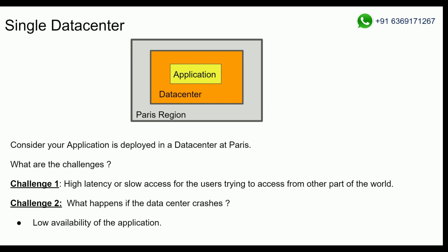So, in this situation, you will see how many challenges you can see. The challenge is high latency, or slow access, for the user who is trying to access this application from other parts of the world. If you look at this application, it is in a data center in Paris. Users nearby can access the application quickly and faster. But if you access the application from other parts of the world, this is one of the challenges.